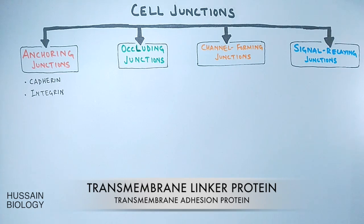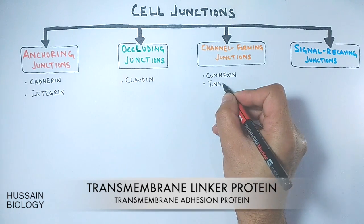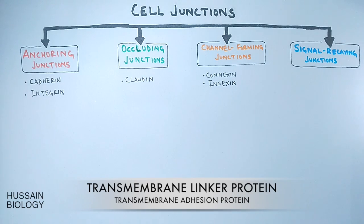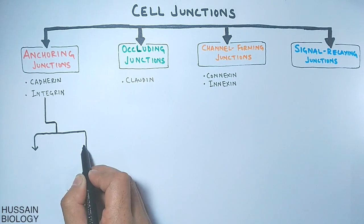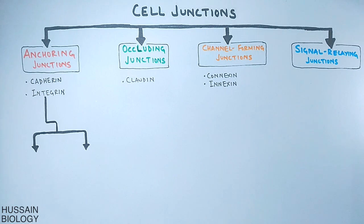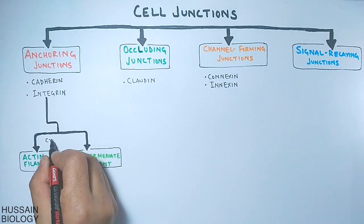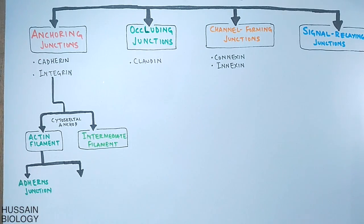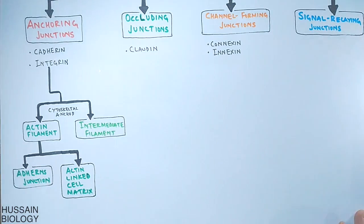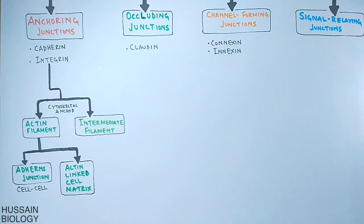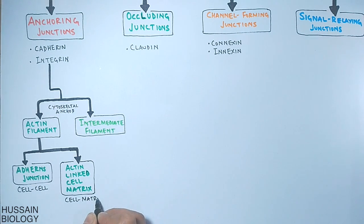In occluding junctions the transmembrane linker is claudin protein, and in channel forming junctions the transmembrane linkers are connexin and annexin proteins. Anchoring junctions are further categorized into two types depending on the type of cytoskeleton anchor protein — it can be actin filament or intermediate filament. The actin filament-containing junctions are of two types: adherens junction, which is between cell and cell, and actin-linked cell-matrix junction, which is between cell and matrix.